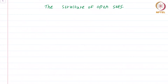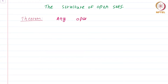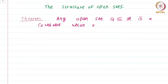All open intervals are also open sets. How complicated can an arbitrary open set look like? In this module, we shall answer this question. I will directly state the theorem: any open set G, a subset of R, is a countable union of open intervals.